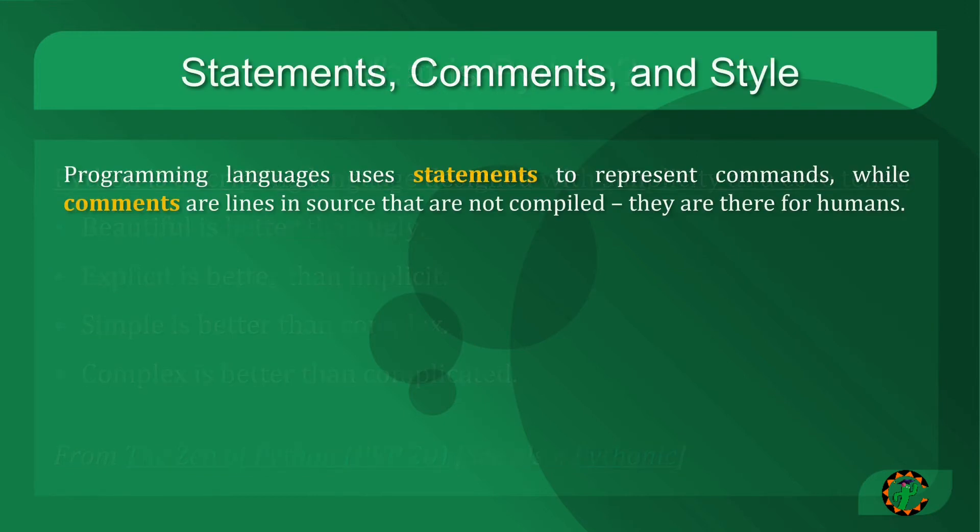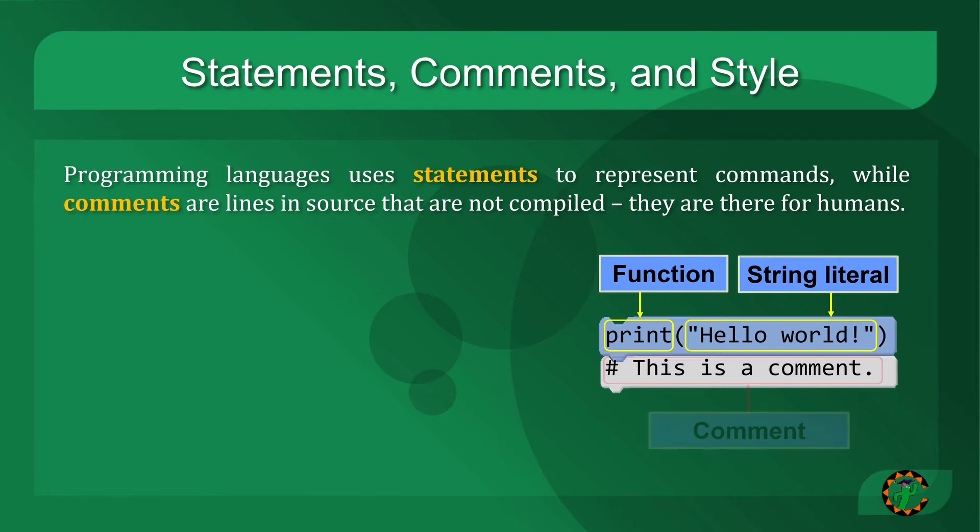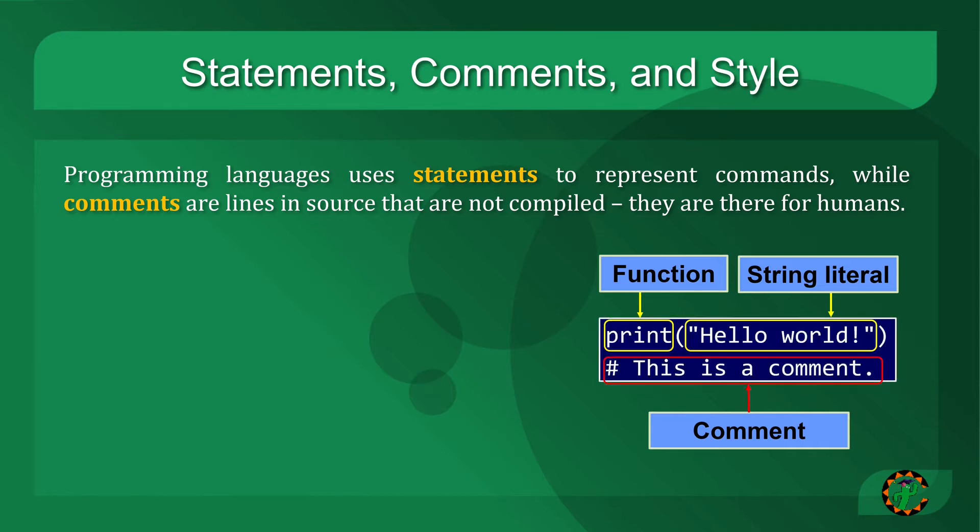Now, every programming language, whether Python or otherwise, uses statements to represent commands, things that we want the computer to do, and incorporates some form of comments, which are lines in the source that are not actually compiled, but are there exclusively for human readability. In this example, we invoke the print function, where a function is a set of instructions we want the computer to execute, and pass to it a string literal, where string is a sequence of characters. And when we say a type is literal, we mean that the data is directly embedded in the source code. In addition, on the next line, we see a comment. In Python, comments are preceded by a pound symbol. And these lines are not executed by the computer, and instead are just there so that we as human beings can read them later.